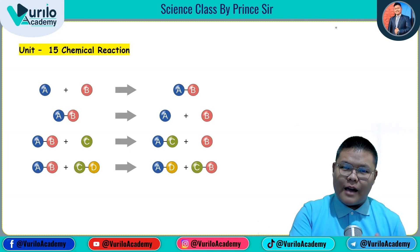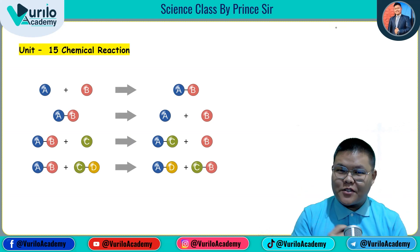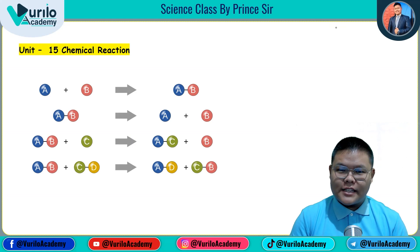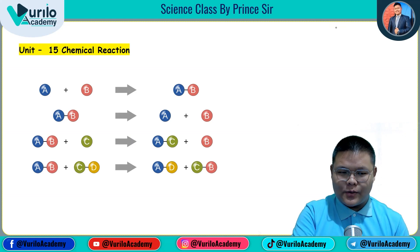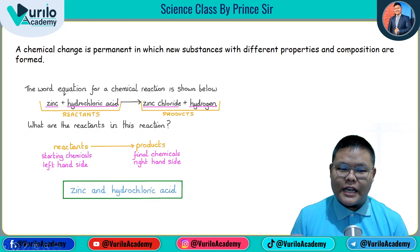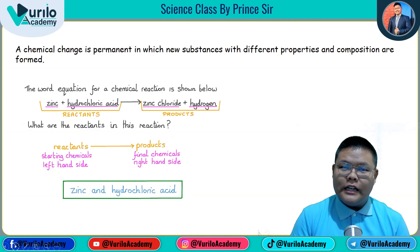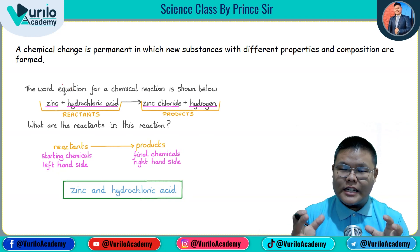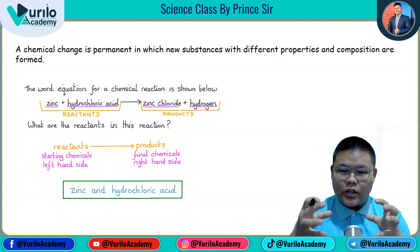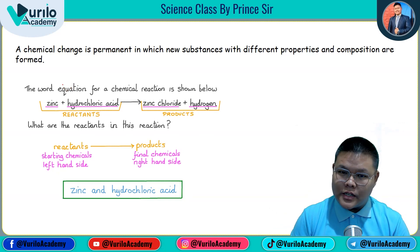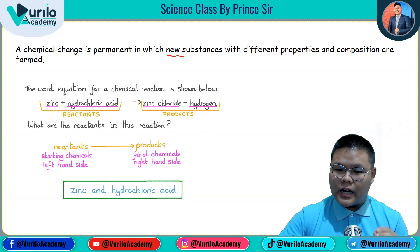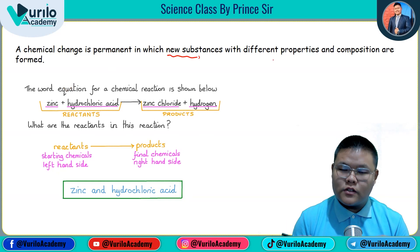Chemical reaction means that we have a chemical reaction. We will talk about a permanent change — in which the chemical change is permanent, and in which new substances with different properties and compositions are formed.